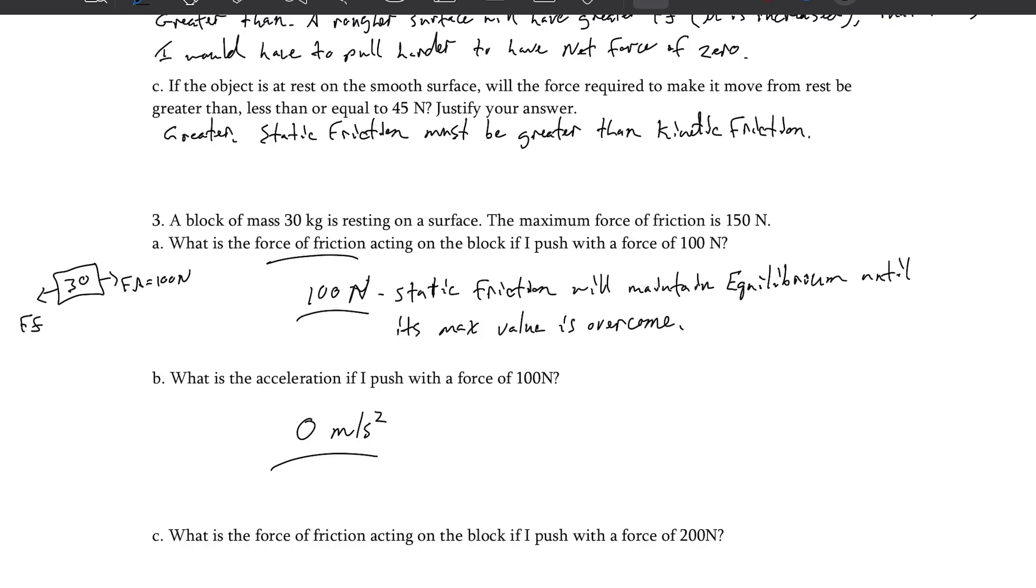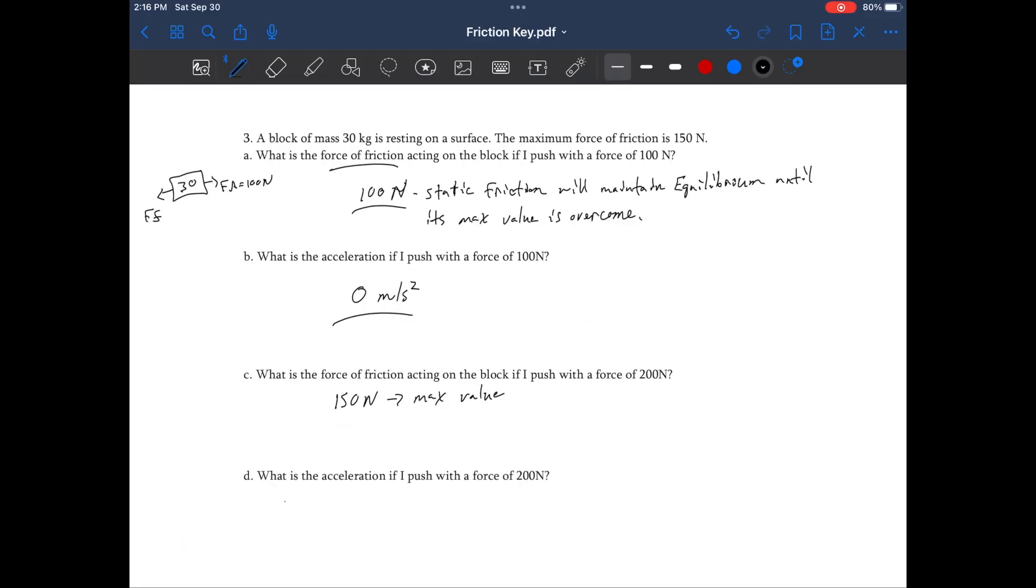What's the force of friction acting on the block if I push with a force of 200 newtons? Here, ideally, we would have been given information where we could calculate kinetic, but since all the information we have is the 150, I'm going to recommend we just say that to the left is 150, that kinetic is the same as maximum static. Let's say it's a rounding error, I don't know, we don't have better information to do anything different. So the acceleration would be net force over mass, 200 minus 150 over 30. So 200 minus the opposing 150 gives us 50, 50 over the mass of 30. 50 divided by 30 should be about 1.67 meters per second squared.